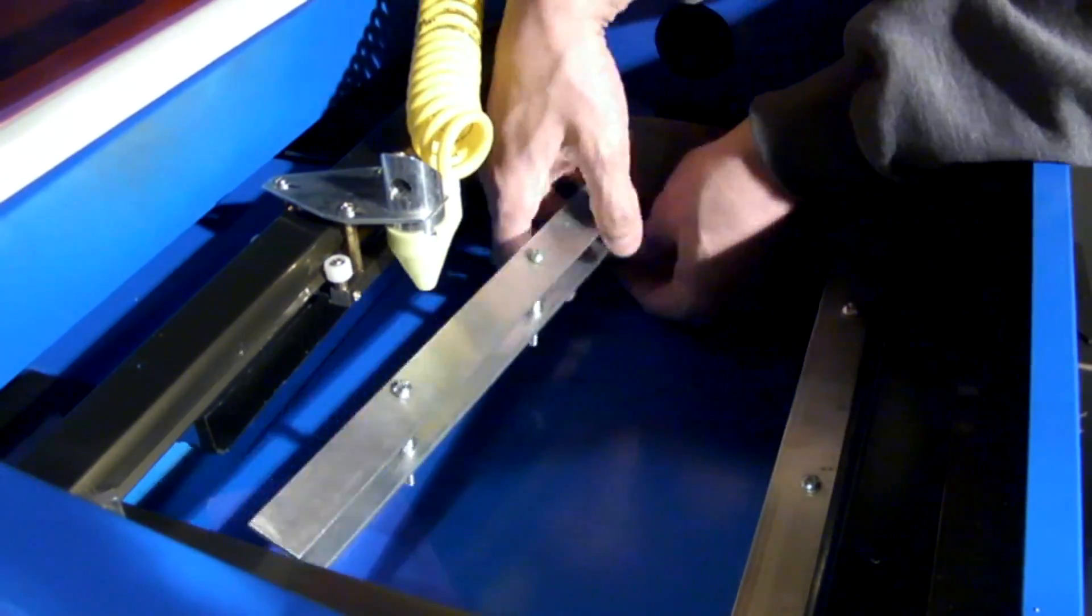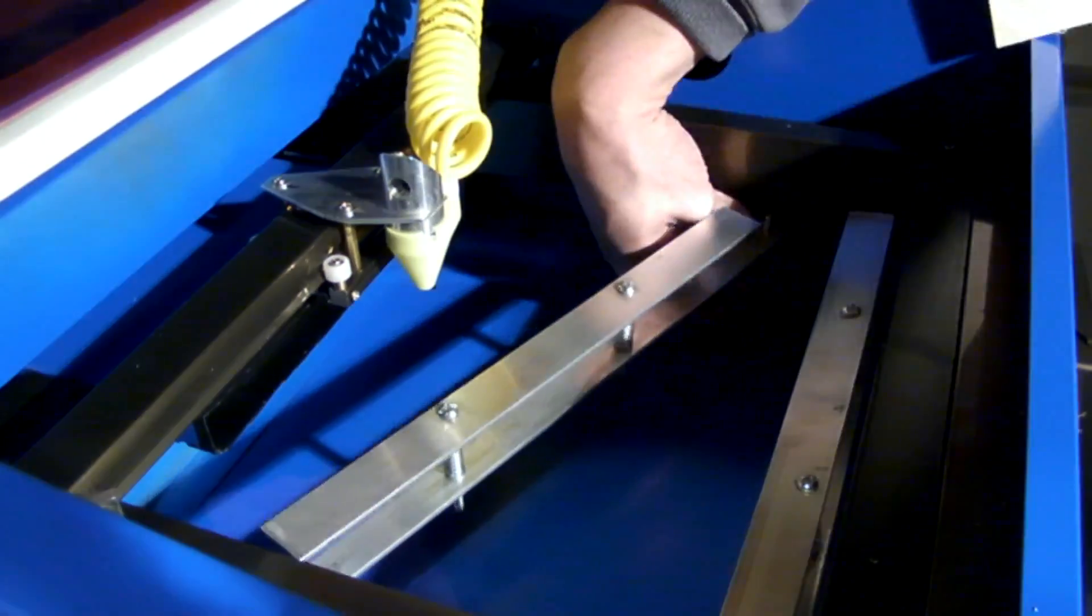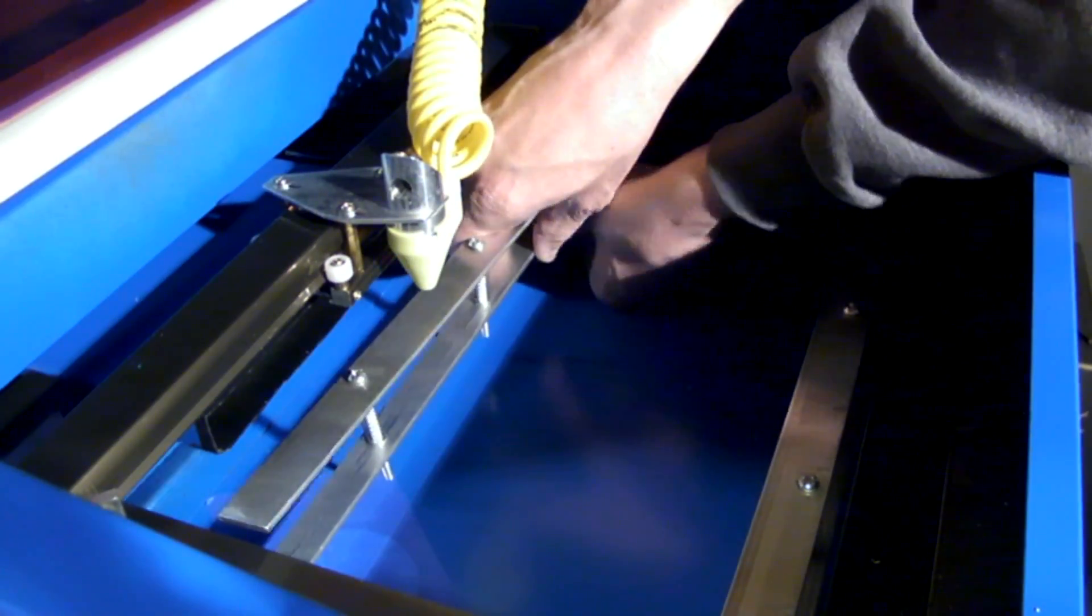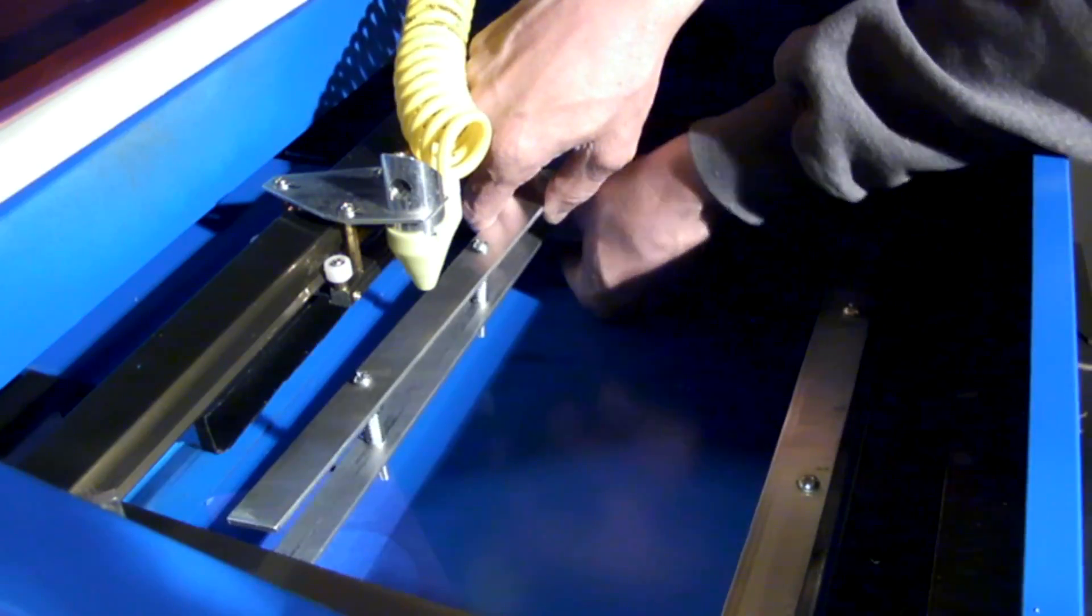Alternately you could make the brackets longer so they extend past the rails on the outside and put in some sort of clamping mechanism that would hold them in place.